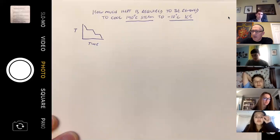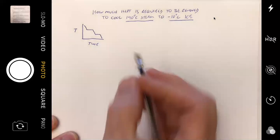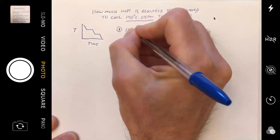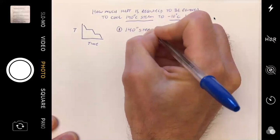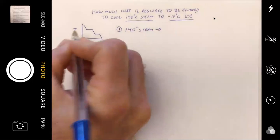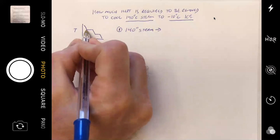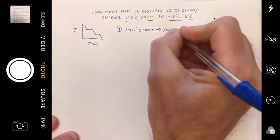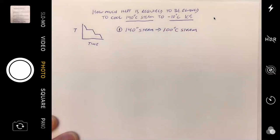Martin, the first thing that we're going to have to do here is we're going to have to cool this 140 degrees Celsius steam. Where do I sort of go at first in this problem? 140 degree steam's got to cool down to what? 100 degrees Celsius. Because what happens at 100 degrees Celsius? It turns back into a liquid.